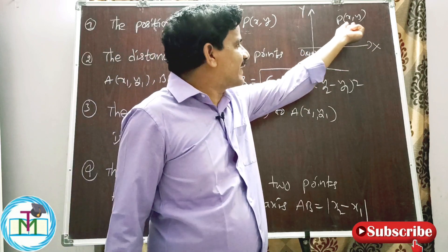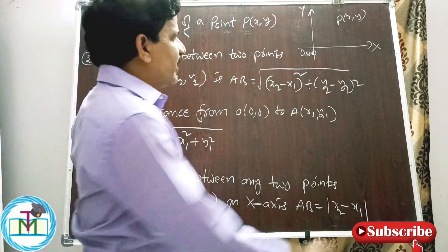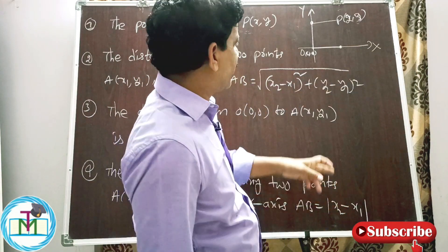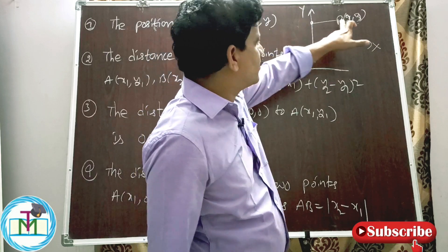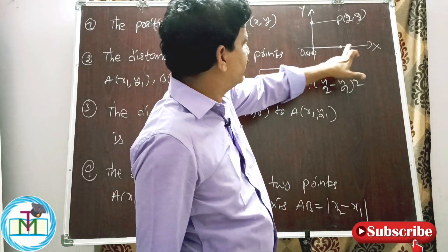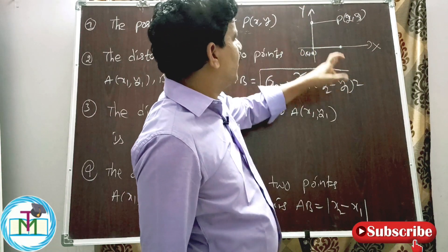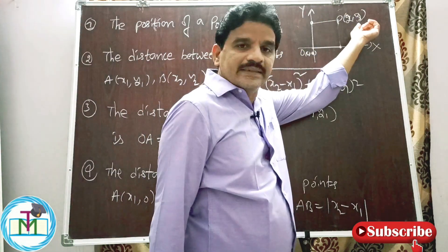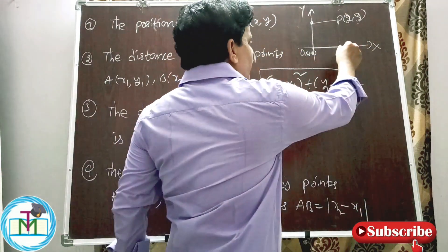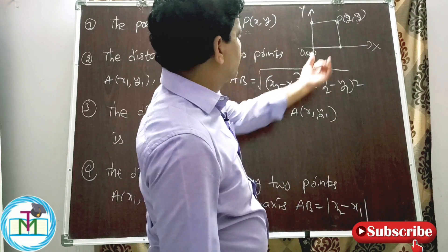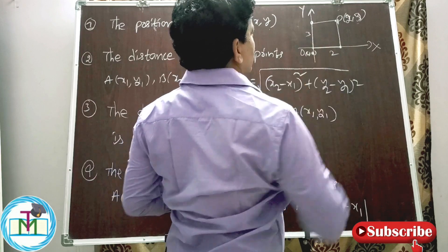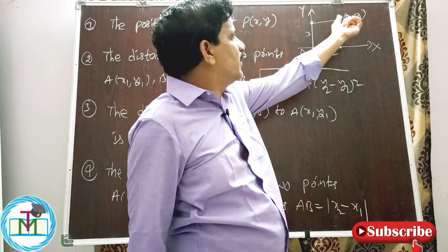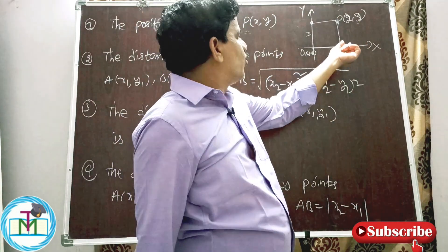For example, if the point is (2, 3), x equals 2 represents the distance from the y-axis to the point P. Similarly, y equals 3 represents the distance from the x-axis to the point P. So x value is 2 and y value is 3. Therefore the point represents the position on the Cartesian plane — it is 3 units from the x-axis and 2 units from the y-axis.